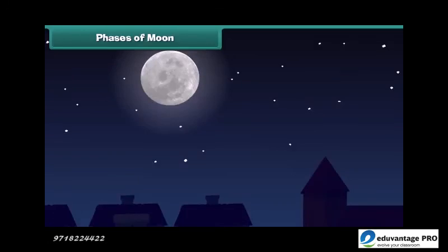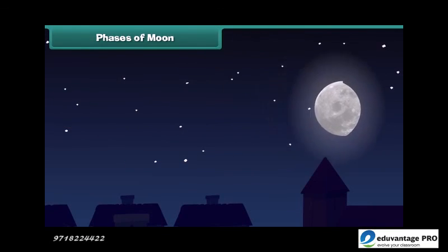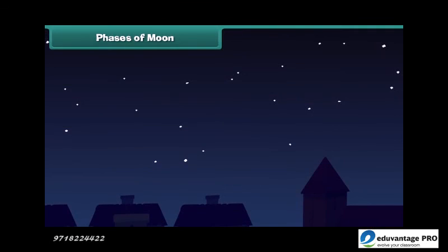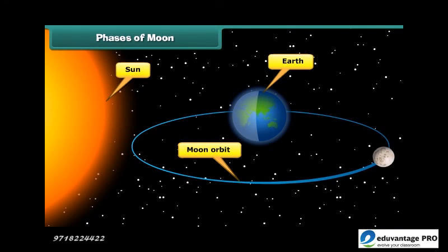You must have noticed that the moon does not always appear as a perfect circle. Do you know why? Because it goes through phases. The changing shape of the bright part of the moon that we see is called its phase. Sunlight strikes the moon at different angles throughout its journey around the Earth. The part of the moon facing the Sun is lit, whereas the part facing away from the Sun is in darkness.